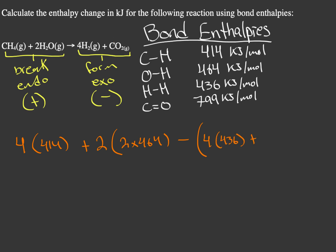And then plus we have our CO2. In CO2, we have two carbon double O bonds, so we have two times 799.